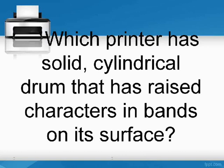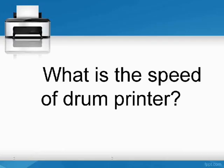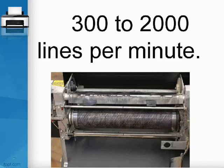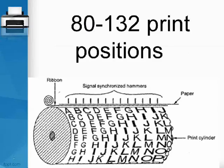The drum printer has a solid, cylindrical drum with raised characters in bands on its surface. Its speed is 300 to 2,000 lines per minute, and it has 8,132 print positions.